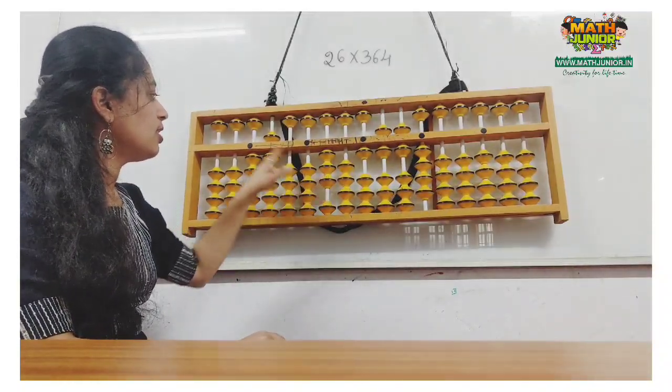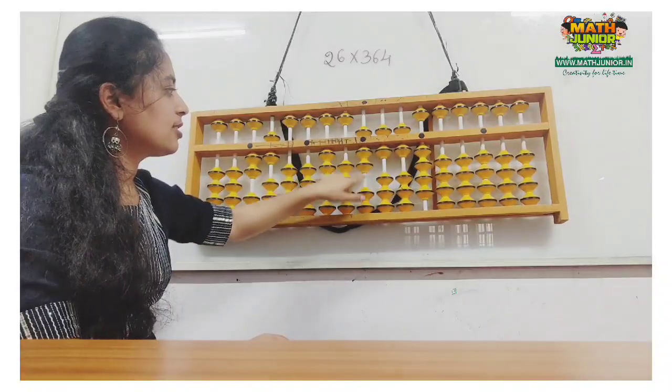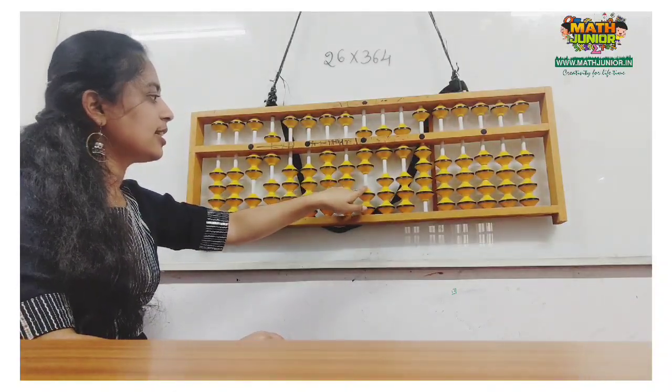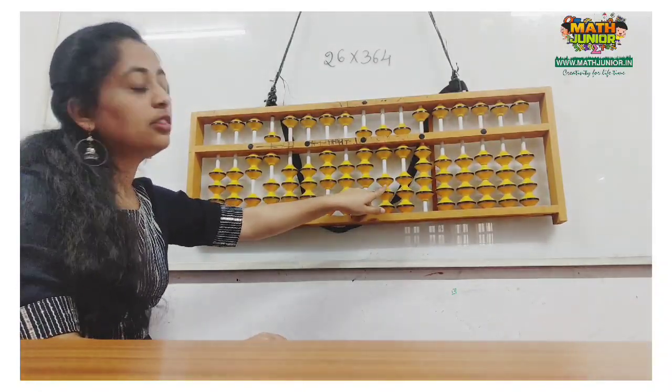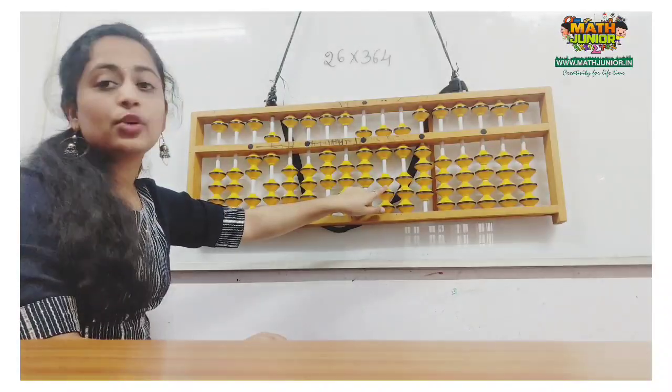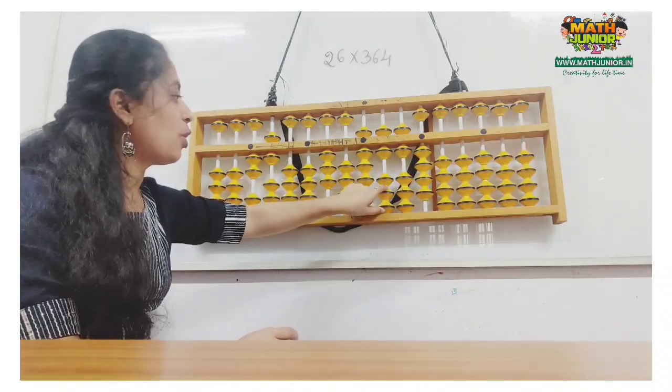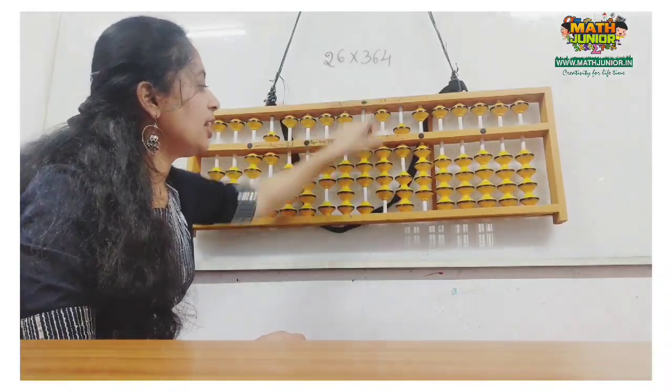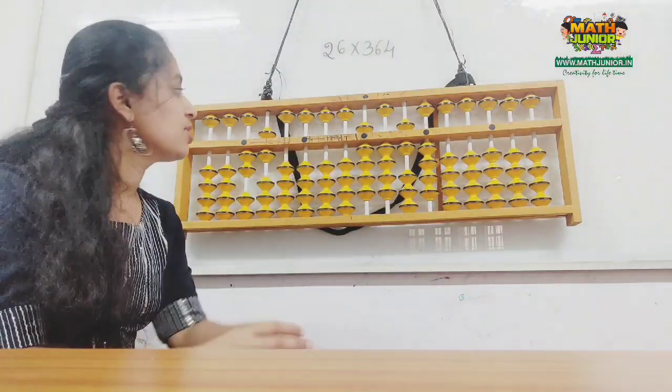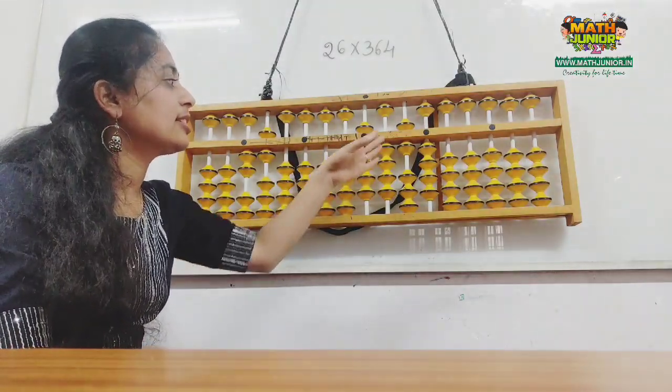Next number is 3. 3 twos are 6, place 6 directly. I cannot add 8 directly, so you can make use of plus-minus complement: plus 3 minus 5 plus 10. The answer is 9464.